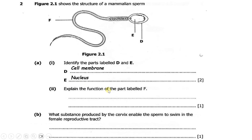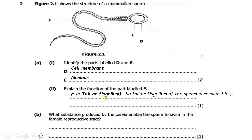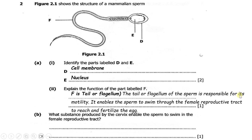Then part 2 says: explain the function of the part labeled F. So this part is a tail, also known as a flagellum. The tail or flagellum of the sperm is responsible for its motility or movement. It enables the sperm to swim through the female reproductive tract to reach and fertilize the egg.